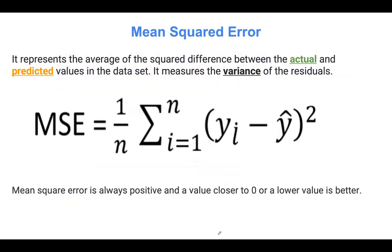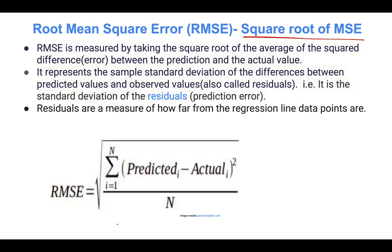In the previous slide, this was our MSE. So basically, that's the square root. It's defined as a measurement by taking the square root of the average of the squared differences. This is our error between the prediction and the actual value.